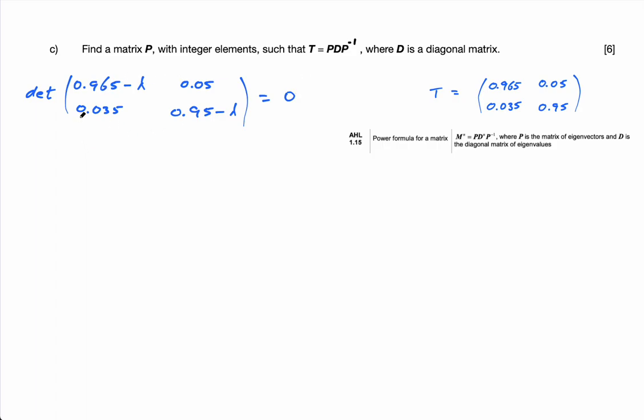Now we're going to solve this equation. Well, this is an equation because it's this times this minus this times this. So it's going to be 0.965 minus lambda times 0.95 minus lambda minus 0.035 times 0.05 equals 0.